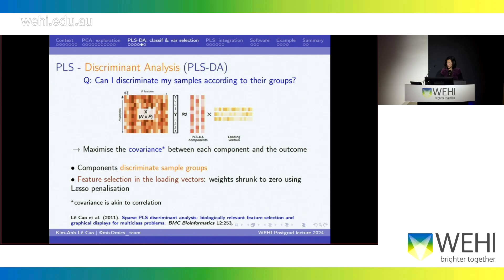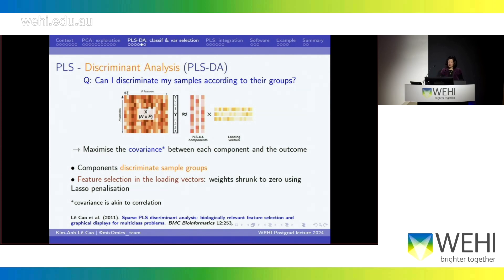We can also do feature selection using the loading vectors. Each gene is assigned a coefficient, and some coefficients are very low, close to zero — meaning those genes are not very useful for defining the component. Using lasso penalization, a technique from regression, you can completely shrink these coefficients to zero, so that in the end you only obtain a loading vector with high values and zeros. The high coefficient values correspond only to the genes that participate in the discrimination of your sample groups — this is how you do feature selection.